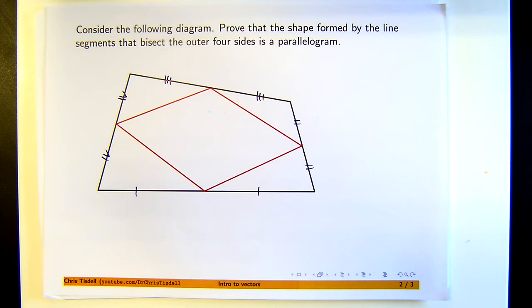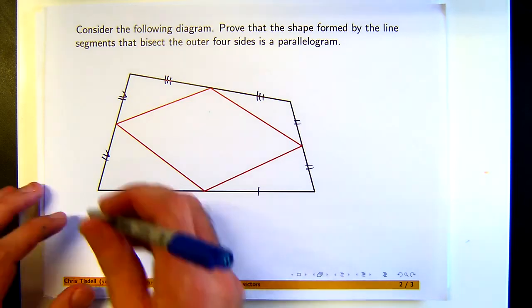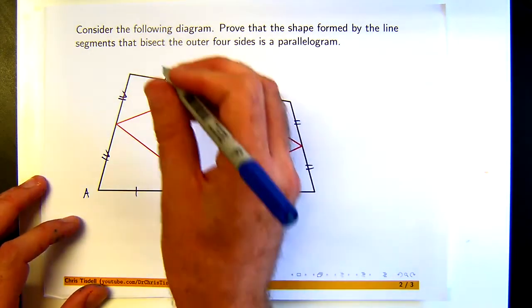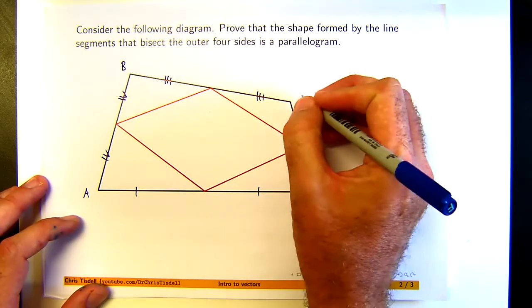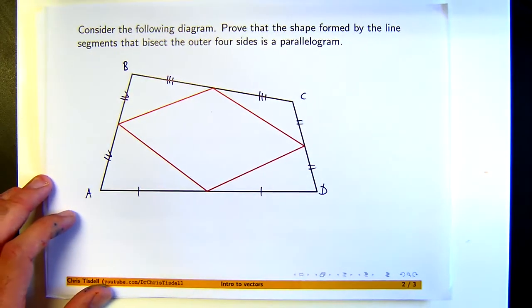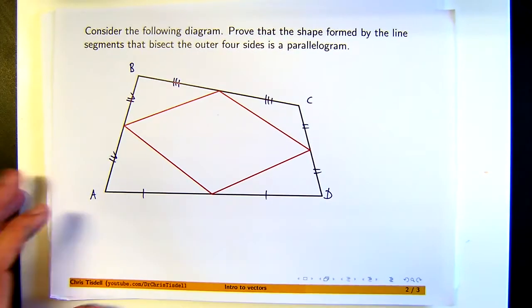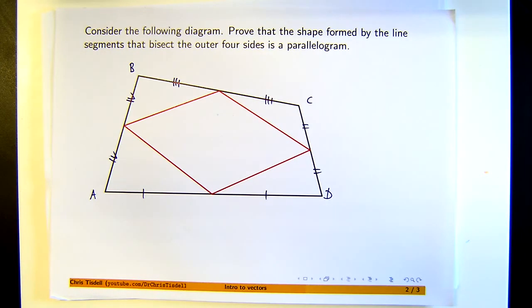So I'm going to label some of the corners of the shapes involved, and I'm going to label the corners of the red shape as well.